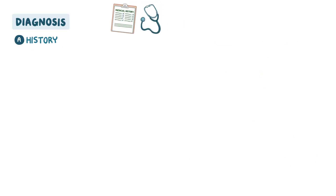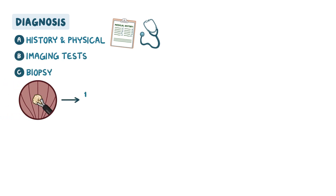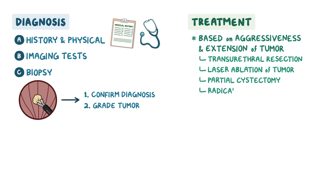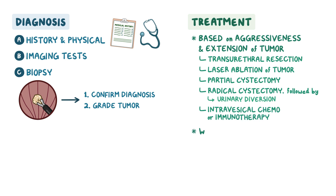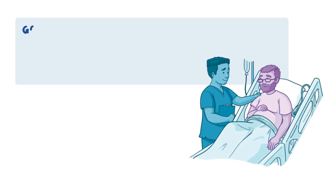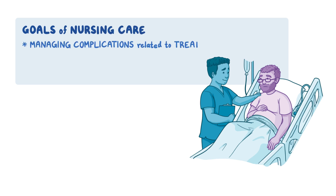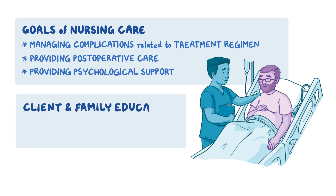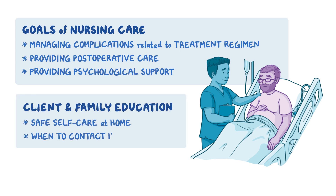Diagnosis involves the client's history and physical assessment, imaging tests, and biopsy to confirm diagnosis and grade the tumor. Treatment is based on aggressiveness and extension, and may include transurethral resection or laser ablation, partial cystectomy, radical cystectomy followed by urinary diversion, intravesical chemotherapy or immunotherapy, and for widespread disease, radiation therapy, systemic chemotherapy, and palliative care. Priority nursing goals include managing treatment-related complications, providing post-operative care, and providing psychological support. Client and family teaching centers around safe self-care at home and knowing when to contact the healthcare provider.